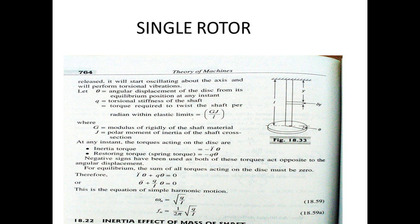What do you mean by torsional vibration? Consider a shaft that is assumed to be weightless and fixed at one end, carrying a heavy disc or flywheel at the free end. It is allowed to vibrate in a circular fashion about the axis of the shaft by the application of an external torque on the disc. After the initial displacement, if we remove the external torque, the shaft is twisted and untwisted alternately and shear stresses are induced. This kind of movement is called torsional vibration.